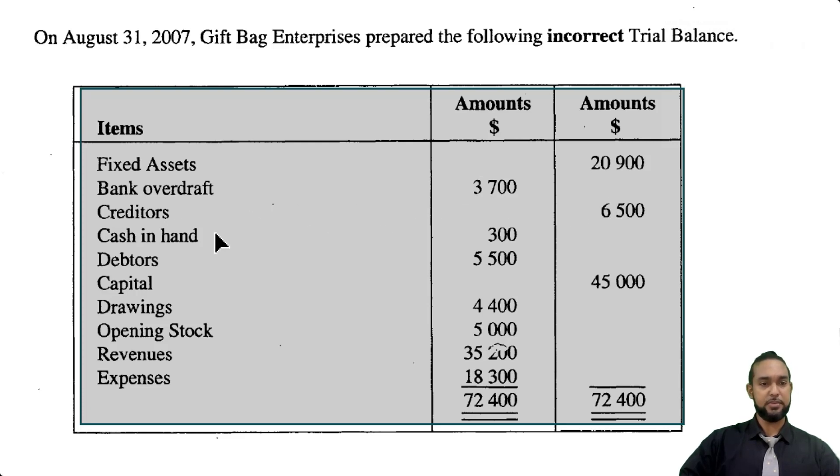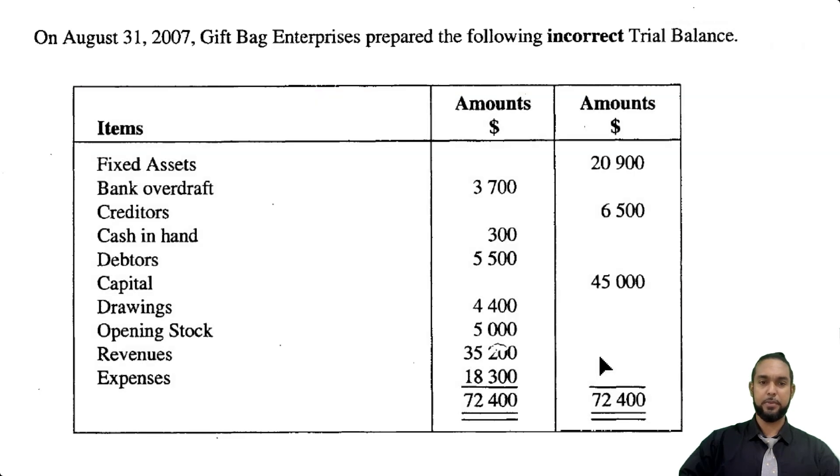Creditors in the credit, that's fine. Cash and debtors are assets, they have debit balances. Capital has a debit balance, fine. Drawings is debit, opening stock is debit. Revenues should have a credit balance. Okay so this trial balance is messed up and it still balances.